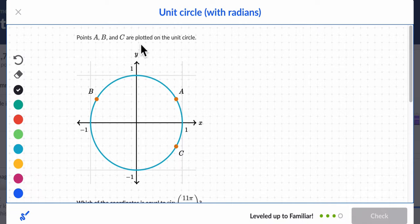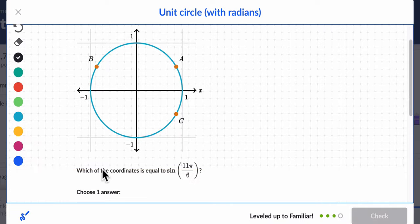Points A, B, and C are plotted on the unit circle. Which of the coordinates is equal to the sine of 11 pi over 6? So, 12 pi over 6 would be a full rotation from the x-axis, right?